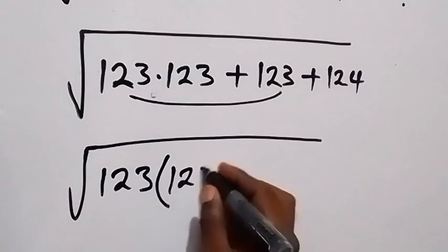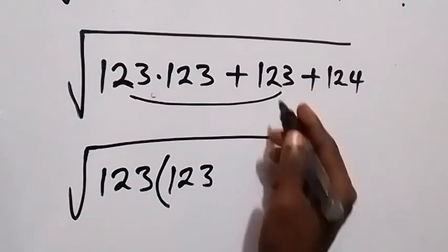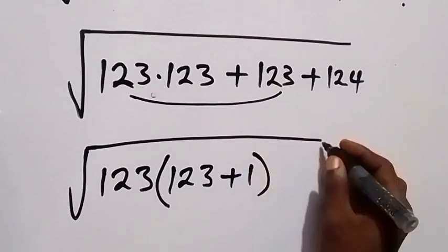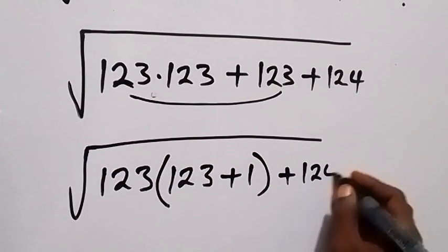So we have 123. What is left here? After taking 123 out, that's plus 1, then plus 124.